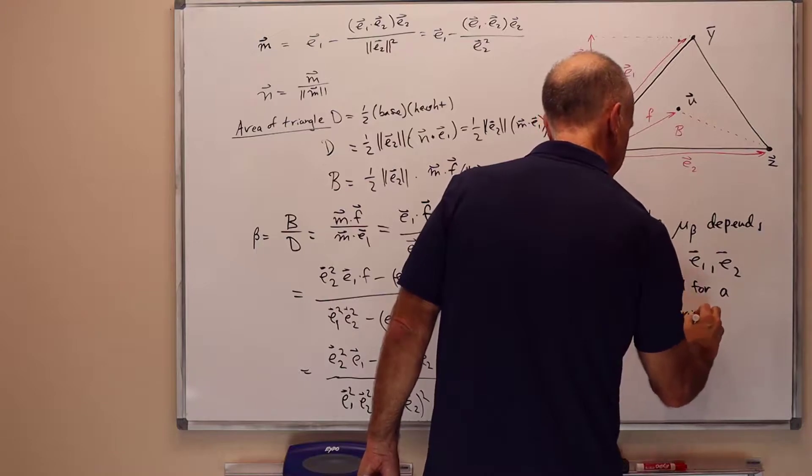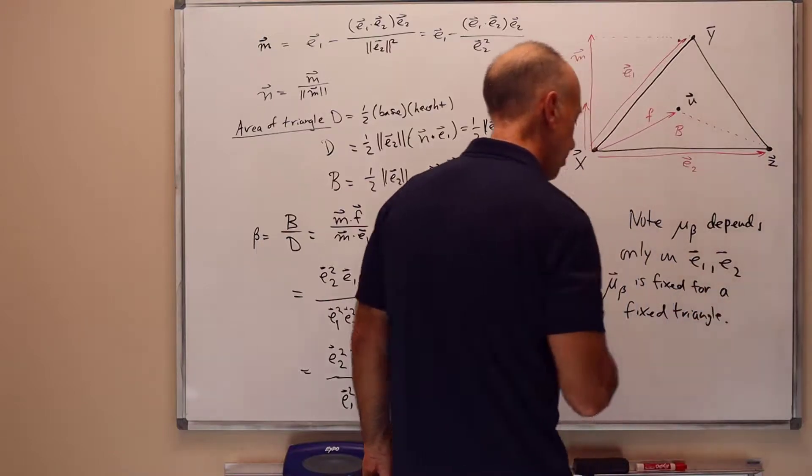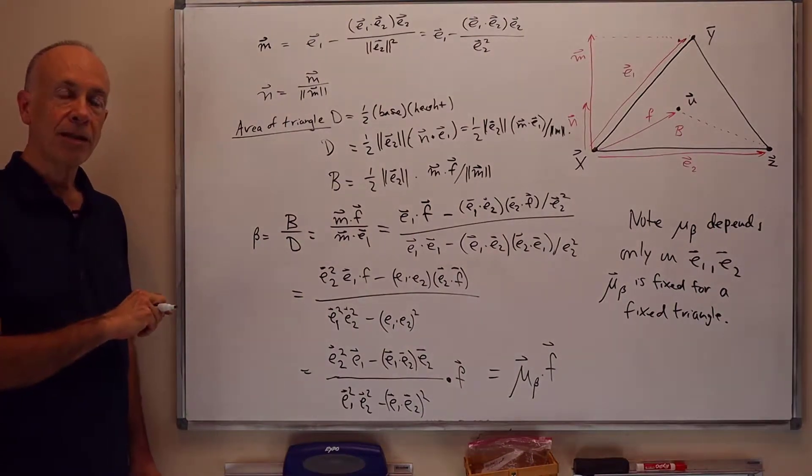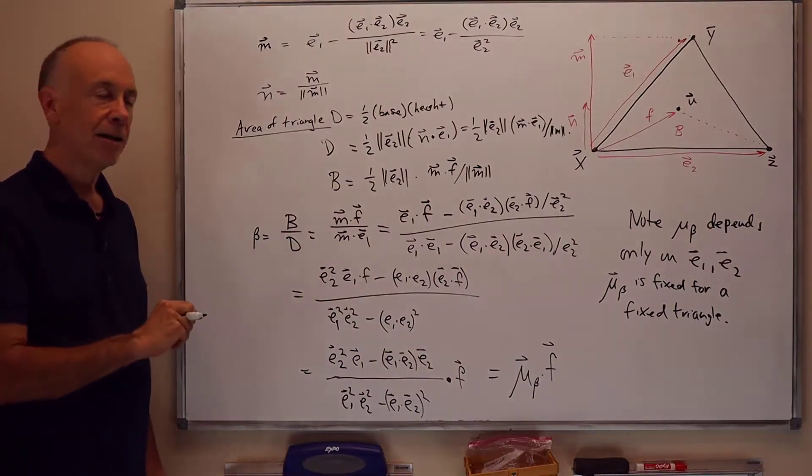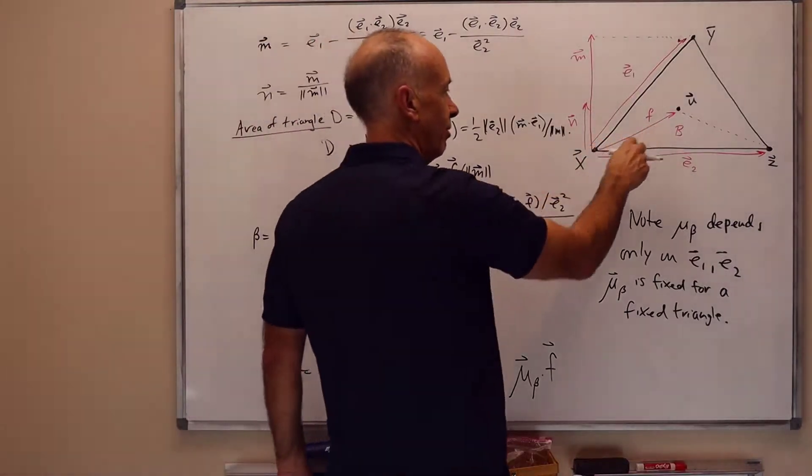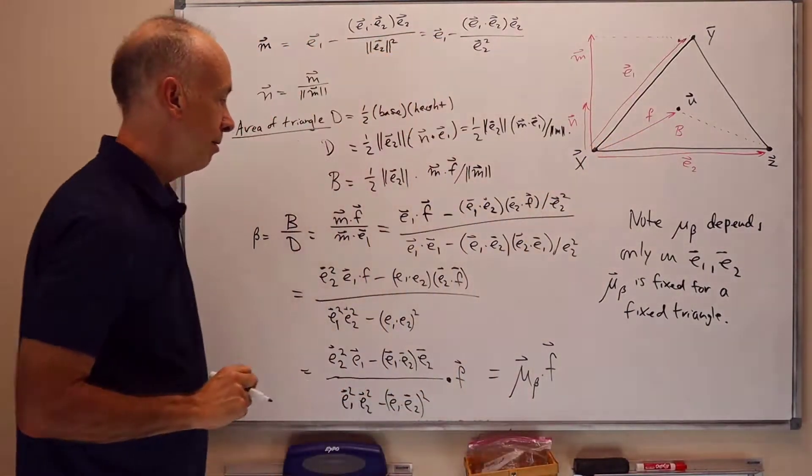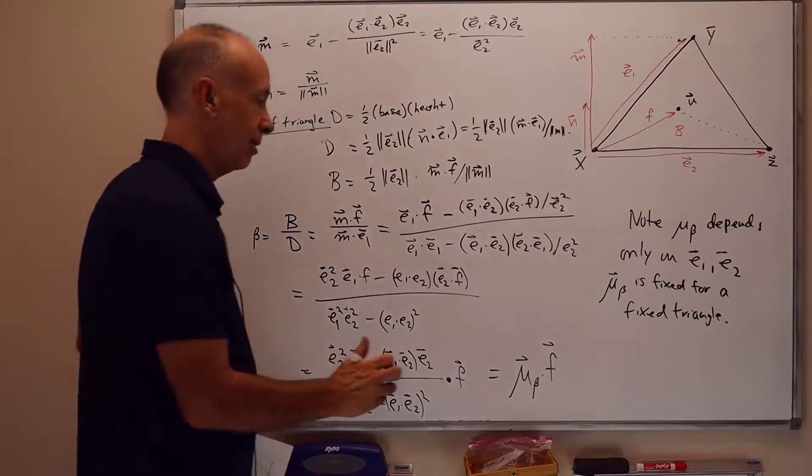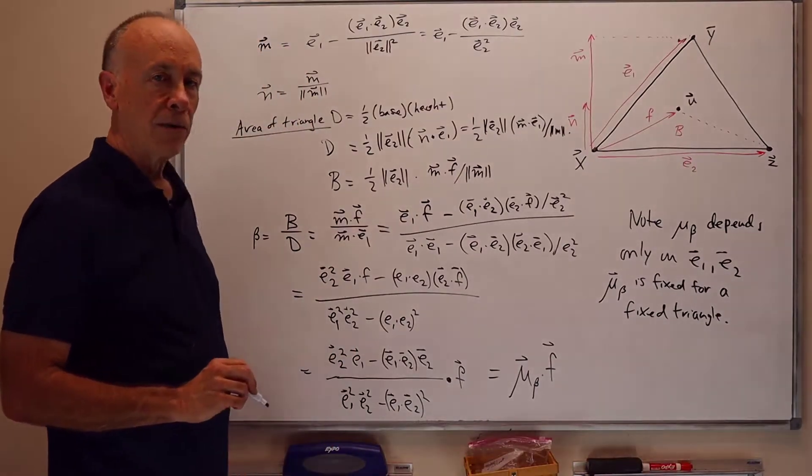So this is the kind of thing that can be pre-computed for the triangle and saved. And then the barycentric coordinates give us just a single dot product with the difference of u and x gives us the beta value for the barycentric coordinates. Similar formulas work for alpha and gamma.